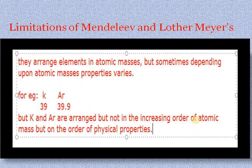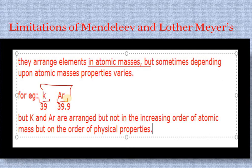Mendeleev had a limitation: he arranged elements by atomic masses, but some placements were inconsistent. For example, potassium has a mass of 39 and argon has a mass of 39.9, but Mendeleev placed argon in group 18 and potassium in group 1. In the periodic table, argon is in period 3 and potassium in period 4, but by atomic mass potassium should come before argon. Mendeleev placed them based on similar properties, which contradicted his own atomic mass rule.